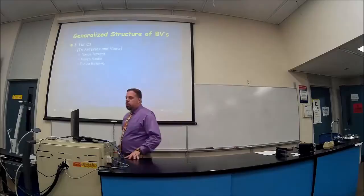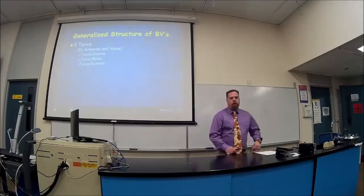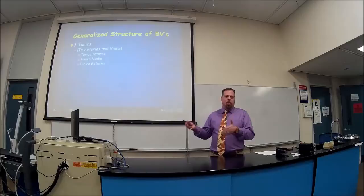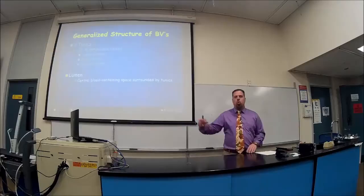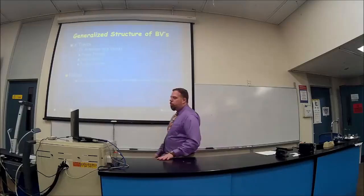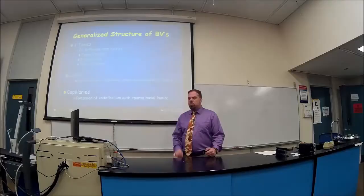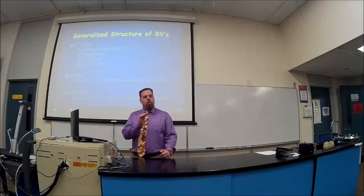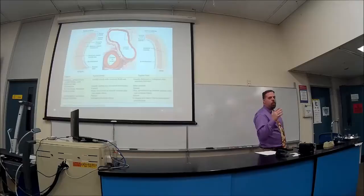The generalized structure of blood vessels involves three tunics — a fancy word for layers. We have tunica interna, media, and externa. The lumen is the cavity through which blood flows. Capillaries are composed of just an endothelial layer of simple squamous epithelium and a very small basal lamina — very thin connective tissue around it. You'd expect them to be thin so gas exchange can happen without oxygen having to pass through many layers. Function reflects structure.